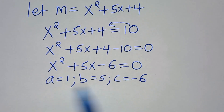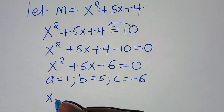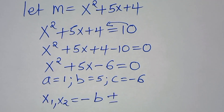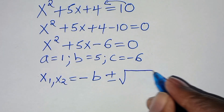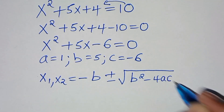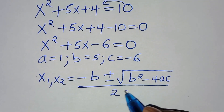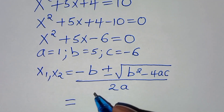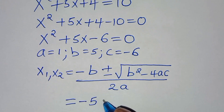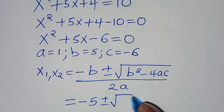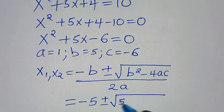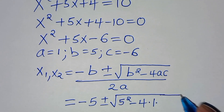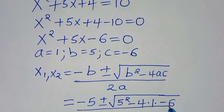Applying the quadratic formula for x₁ and x₂: x = (-b ± √(b²-4ac)) / (2a), substituting a=1, b=5, c=-6.